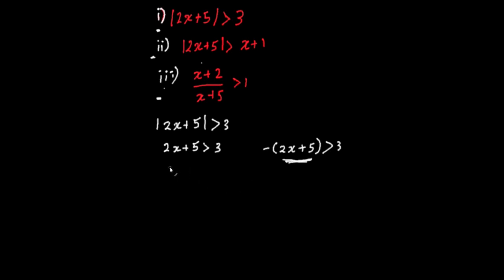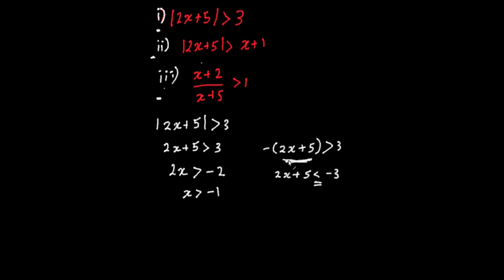In the positive case, it's straightforward: 2x is greater than minus 2, so x is greater than minus 1. Now, as soon as it's a negative number, it means 2x plus 5 is less than minus 3 — because when you divide or multiply both sides of an inequality by a negative number, the sign switches. So 2x is less than minus 8, giving x is less than minus 4. Those are your two solutions.